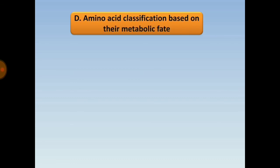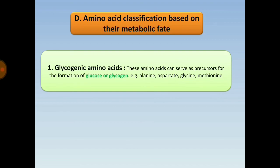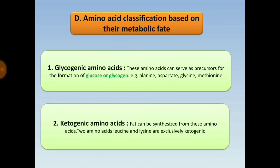Classification based on metabolic fate: glycogenic amino acids can serve as precursors for the formation of glucose or glycogen in the body — examples include alanine, aspartate, glycine, and methionine. Ketogenic amino acids can be used to synthesize fats; leucine and lysine are exclusively ketogenic.